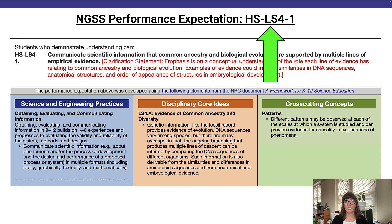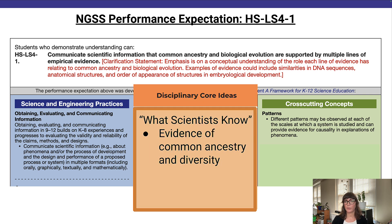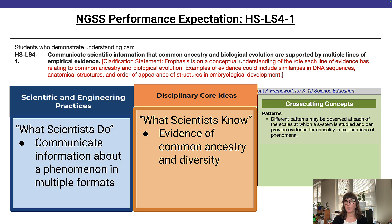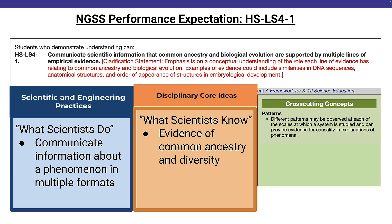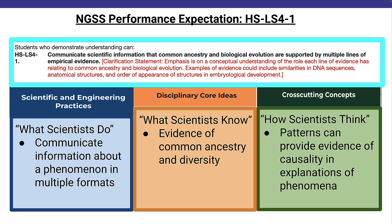Students who demonstrate understanding of this PE will know specific DCI, or disciplinary core idea, content about the types of information that can provide evidence of common ancestry and evolution. They will also apply that knowledge by doing the SEP, or science and engineering practice, of communicating information in multiple formats. All of this happens through the lens of the CCC, or cross-cutting concept, using patterns to establish causality and explain phenomena. These three dimensions require students to communicate scientific information that common ancestry and biological evolution are supported by multiple lines of empirical evidence.